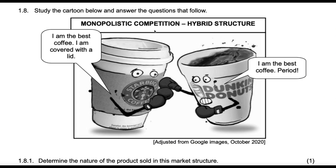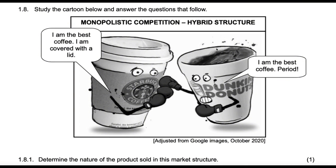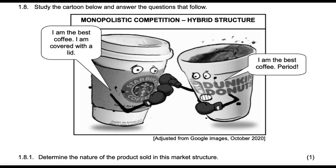Monopolistic competition. Don't worry about which market structure it is because it's given — the hybrid structure. Expect something around this hybrid structure. One says 'I am the best coffee,' and the other says 'so lead or no lead, I'm the best.' Okay, they're fighting. So what message is depicted? Well, competition. Determine the nature of the product sold — we would say differentiated.